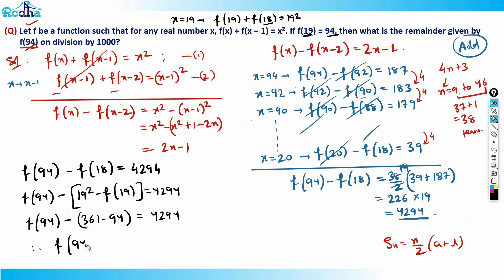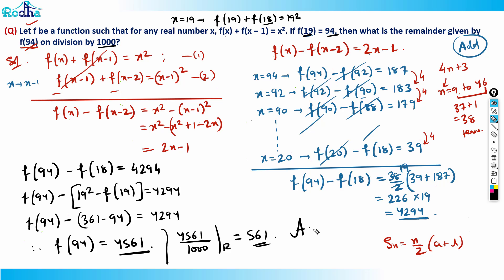The question asks for the remainder when f(94) is divided by 1000. So 4561 divided by 1000 gives a remainder of 561. That's the answer. This is a really good question — key learning is how to introduce a minus sign by substitution to enable telescoping. Definitely worth a star mark — very important concept!